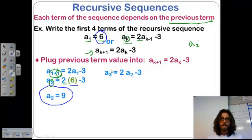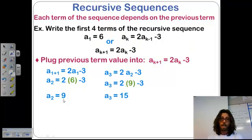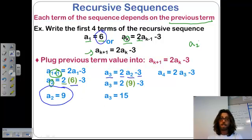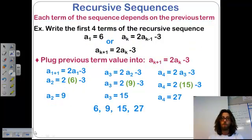And then we could continue on. If we want to know a sub 3, well, that's just going to be equal to 2 times the previous number, a sub 2 minus 3. Calculate it out, and now we have a sub 3. And we can continue for a sub 4. A sub 4 will just be equal to 2 times the previous number in the sequence, a sub 3 minus 3. So, if we want to list these out, we have the first 4 terms, which is what we were looking for, in the recursive sequence 6, 9, 15, and 27.